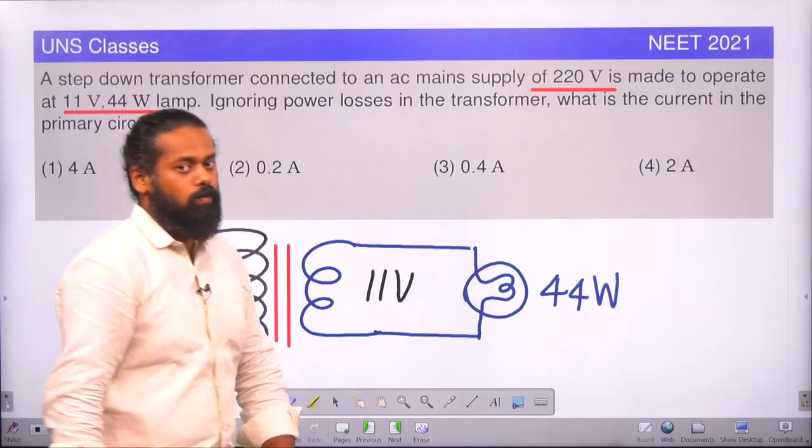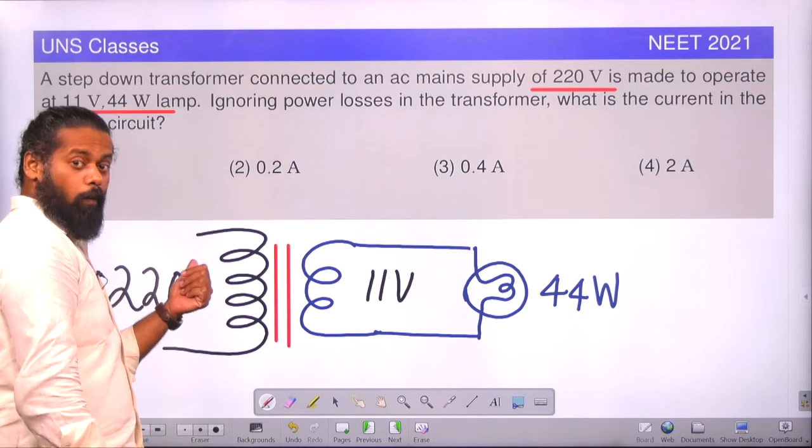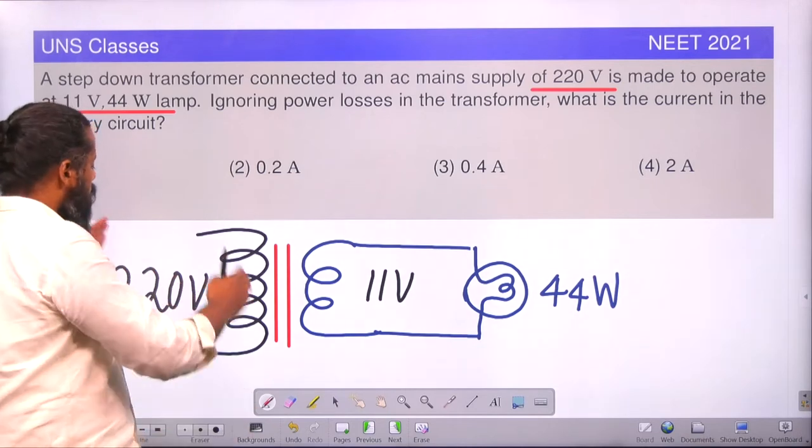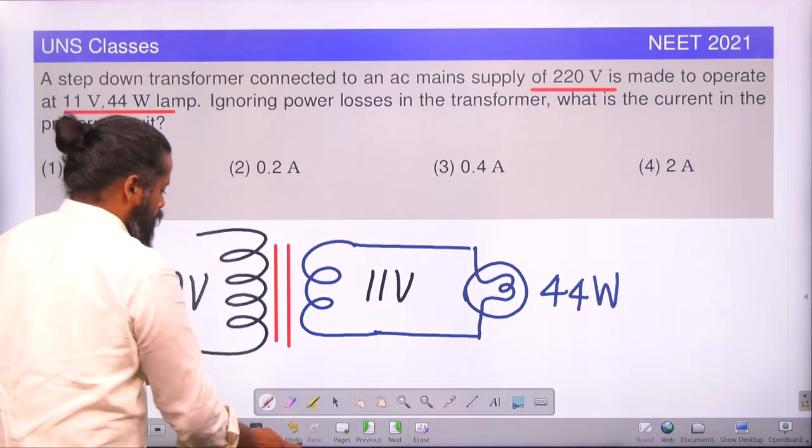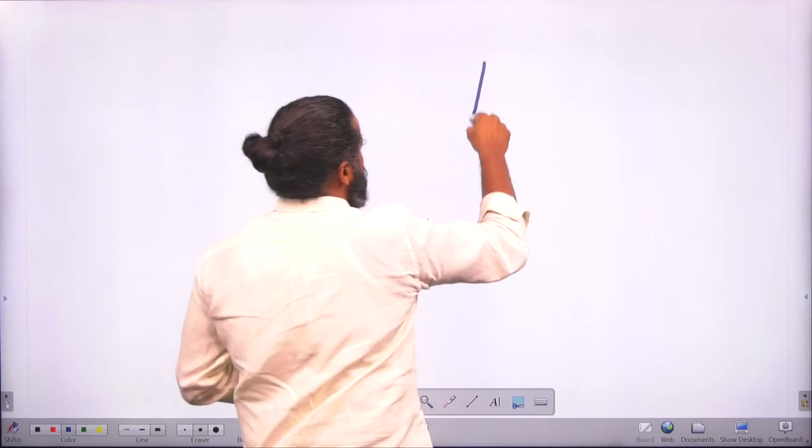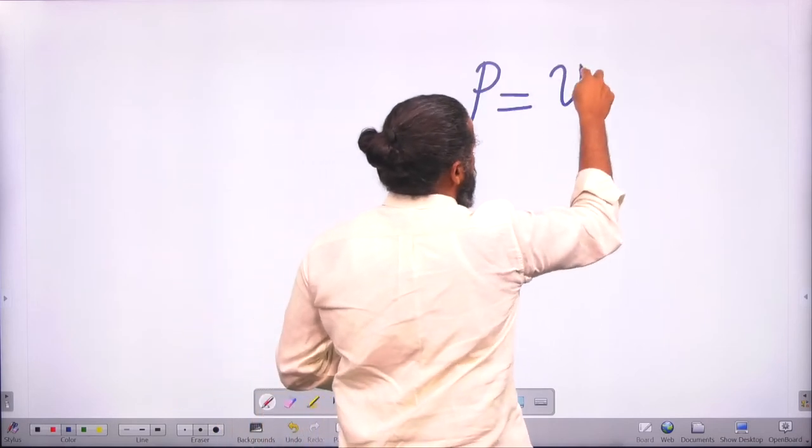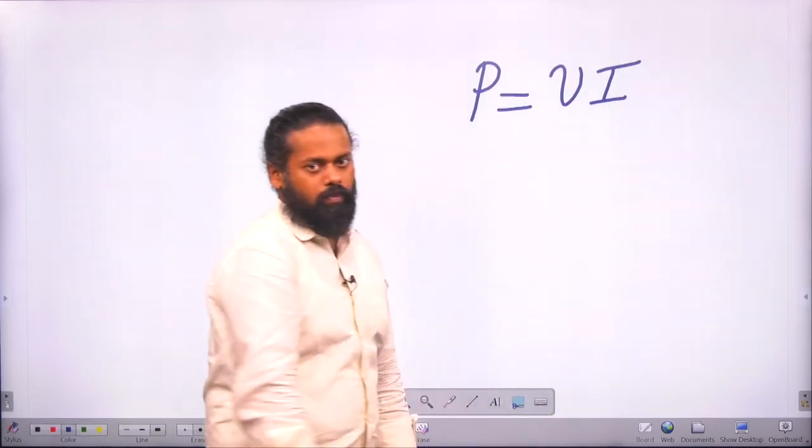We have to find out the primary current. Primary current means here how much is the current we have to find out. You know the power we can find out. What is the equation for power? Power is nothing but the product of voltage and current.